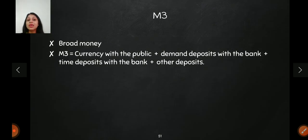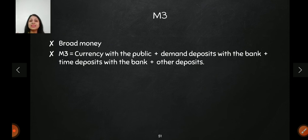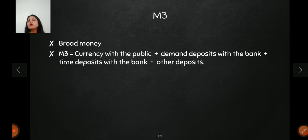The last measure is M3, called broad money. It includes every form of money: currency, demand deposits, and also time deposits. Time deposits are deposits locked in for a particular time period. Those are also included in M3, along with any other sort of deposits. This is called broad money and is a measure of money supply defined by the RBI.